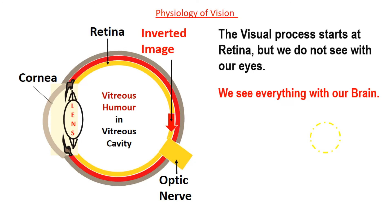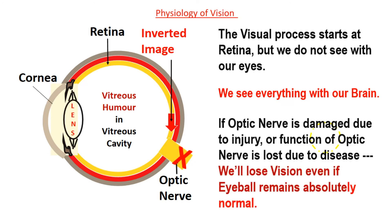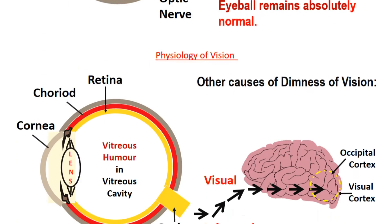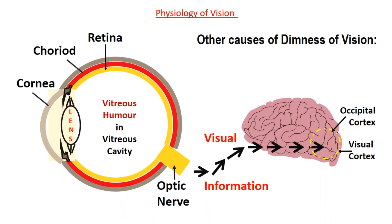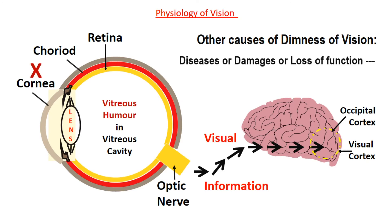An example will clear this doubt. If the optic nerve is damaged due to injury or its function is lost due to disease, we will lose vision even if the eyeball remains absolutely normal and without any defect. But it's not that only damage to the optic nerve will cause loss of vision. Diseases or damage to any parts of the eyeball such as cornea, iris and ciliary body, choroid, retina, lens, vitreous humor, optic nerve, parts of visual pathways, and visual cortex will also cause dimness of vision or loss of vision.